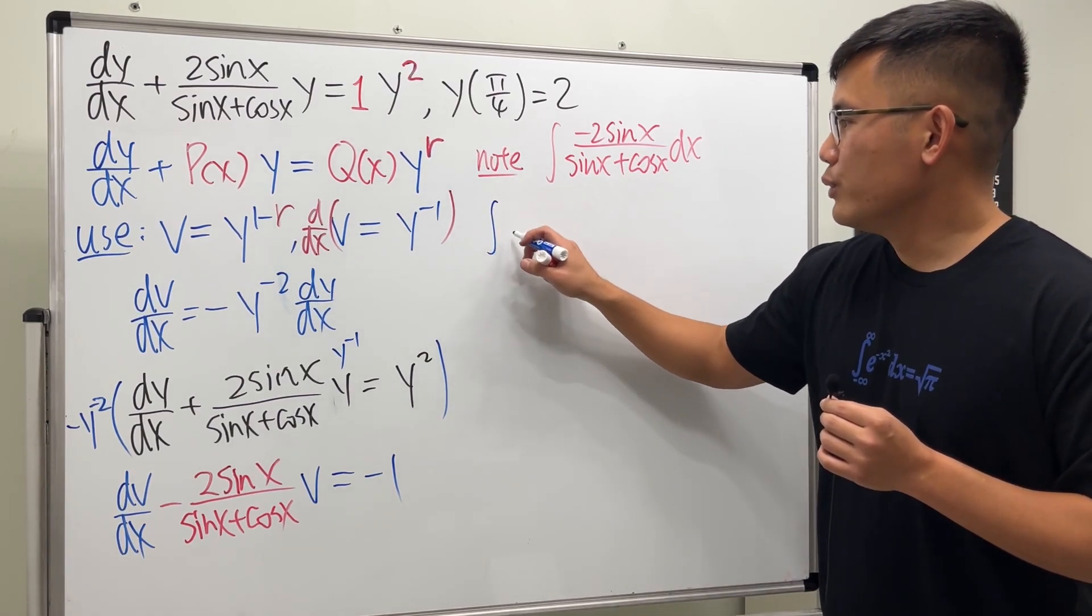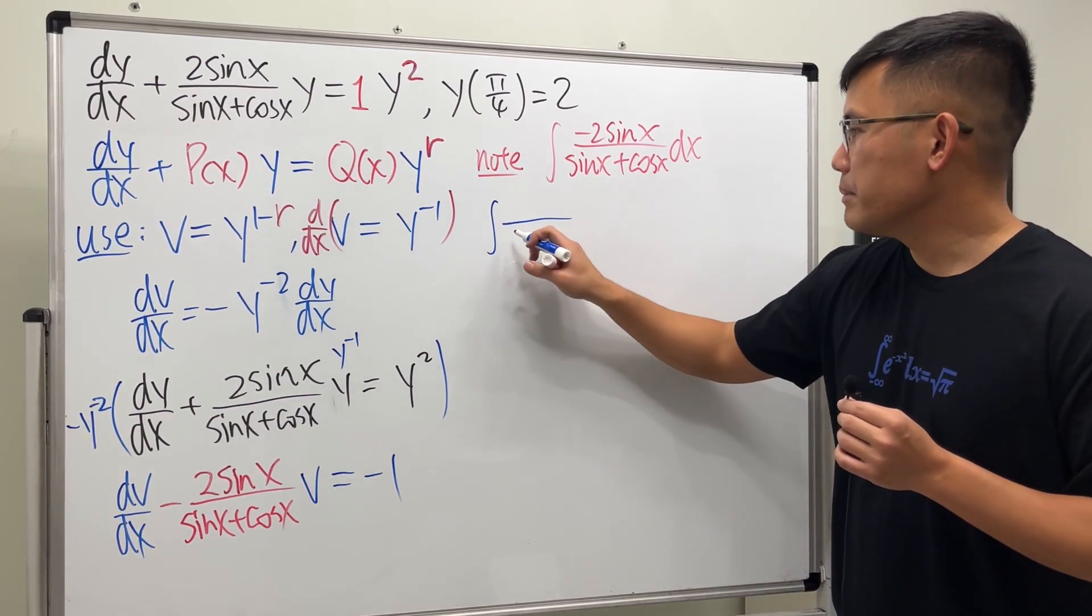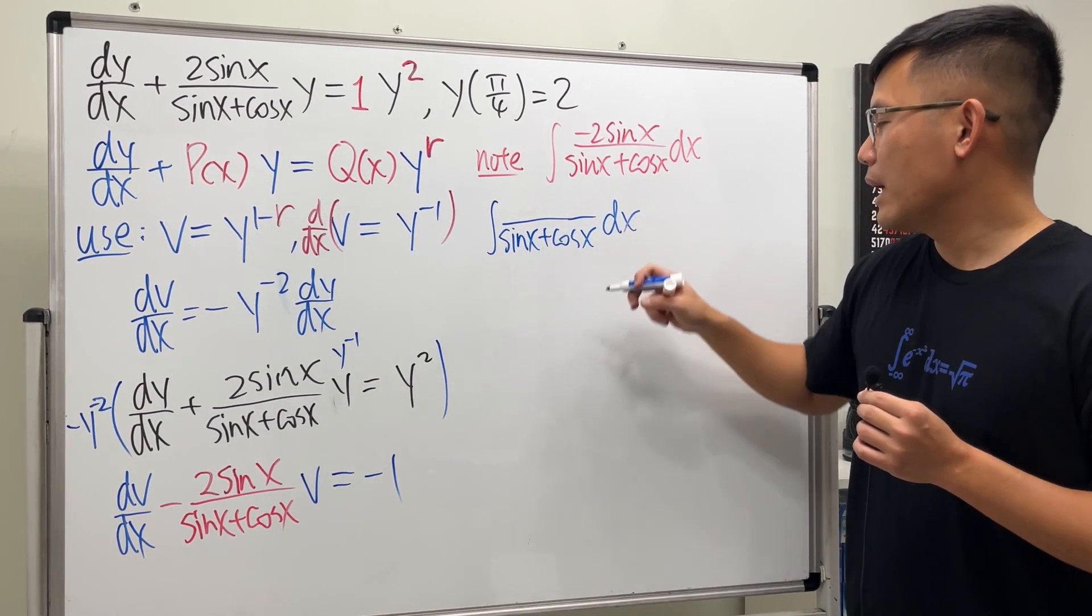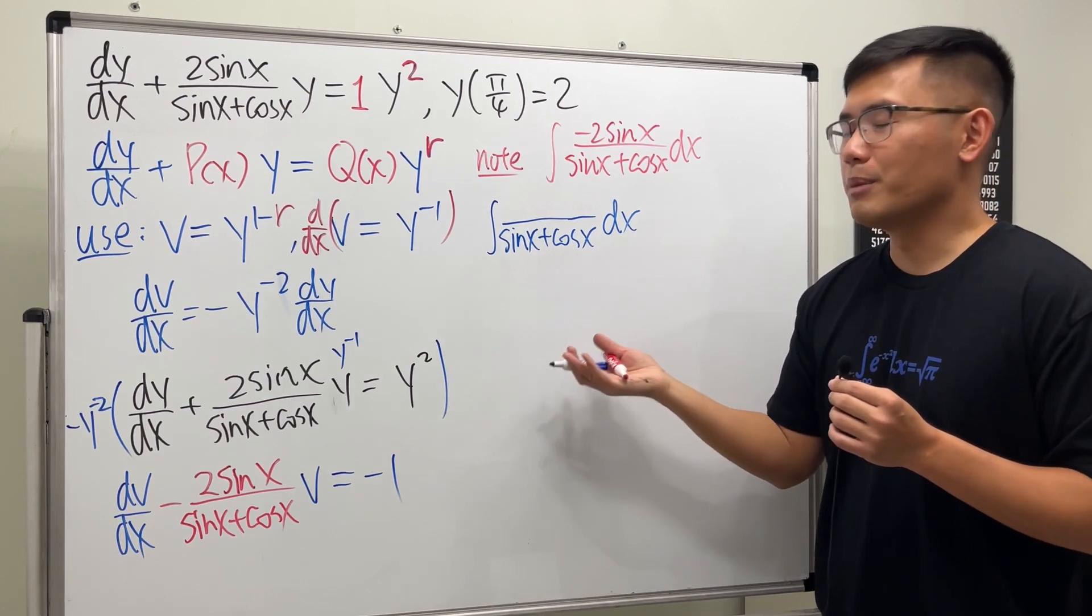Wouldn't it be nice if we're looking at the integral of the denominator, still the same, so sine x plus cosine x. But how can we actually construct an integral that's so much easier than this?